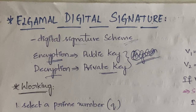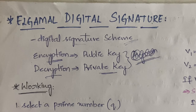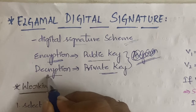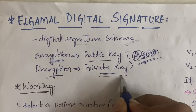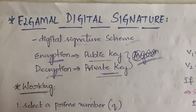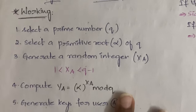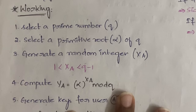Digital signature — I've explained it in the previous video. ElGamal is one of the digital signature schemes, and here we use two different types of keys: on encryption we use the public key, and on decryption we use the private key.